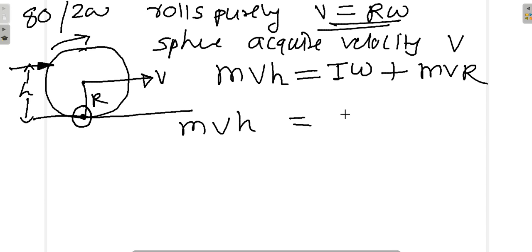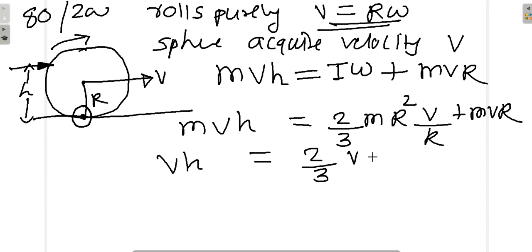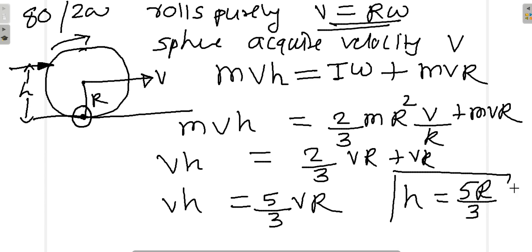So M into V into H equals I omega plus MVR. For a hollow sphere, I is 2 by 3 MR square. Omega is V upon R. V into H, we can cancel M, so V into H will be 2 by 3 times VR plus VR. V will cancel and we will get H as 5R upon 3. So the height at which the cue should be hit is 5R by 3.